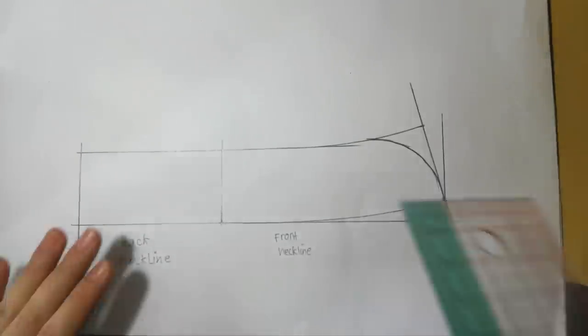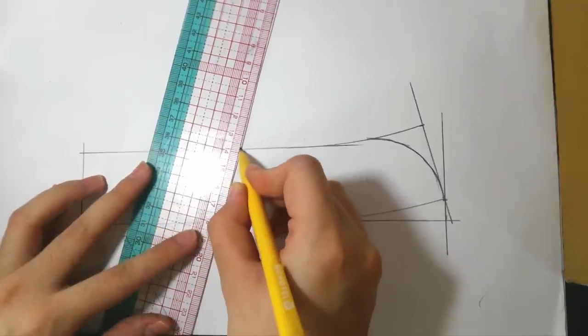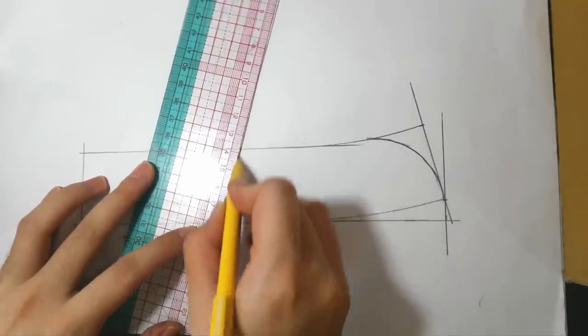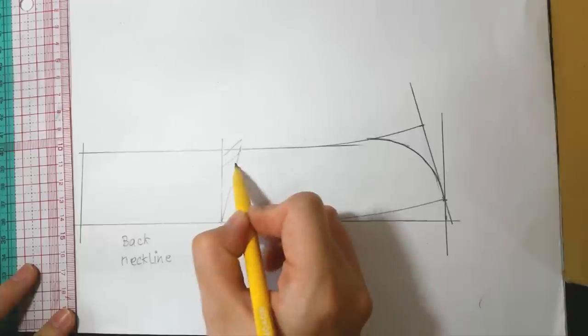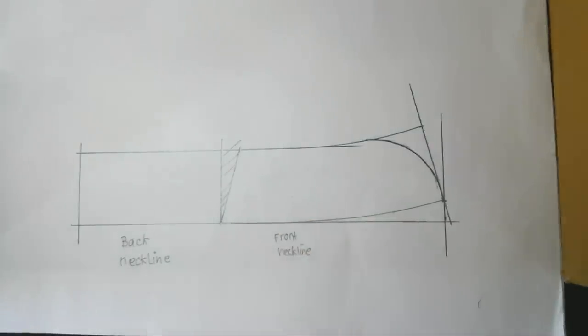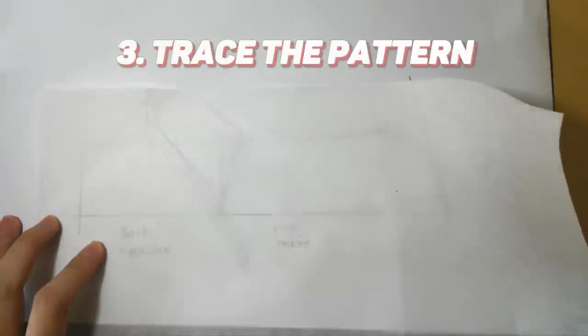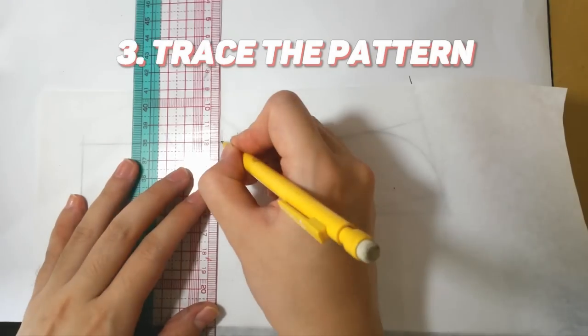I usually also take in 1cm here just to make the top of my collar narrower so it will fit nicely on the neck. Done with drafting! We can trace the pattern. Trace from the back neckline area first.